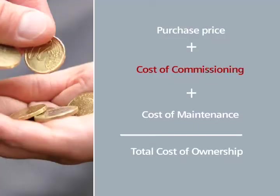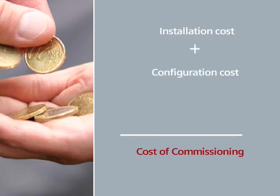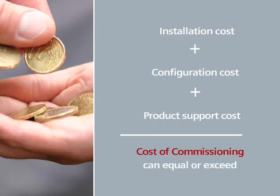The cost of commissioning is a sum of three specific costs: the installation cost, the configuration costs, and the product support costs. These costs can equal or exceed the purchase price of the instrument. However, when you install a Profibus instrument, you can significantly reduce these costs.